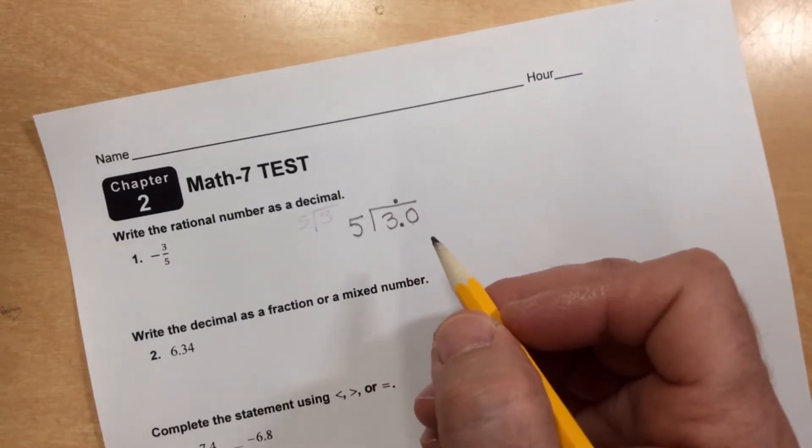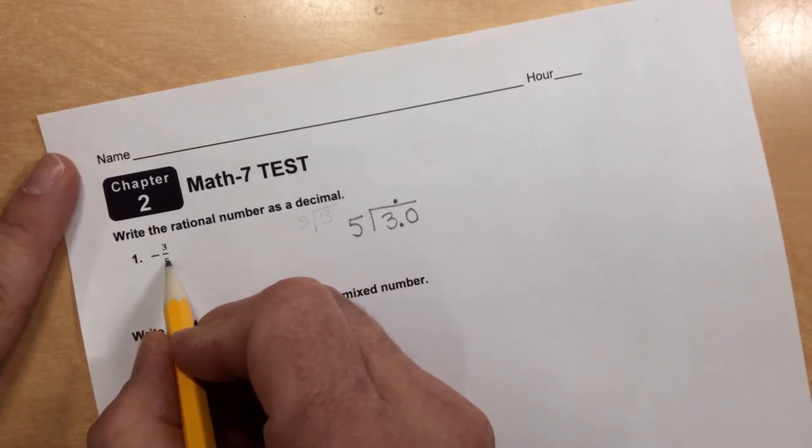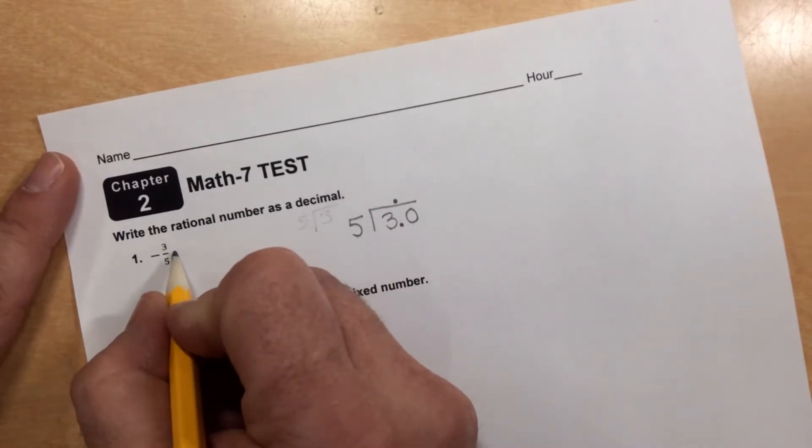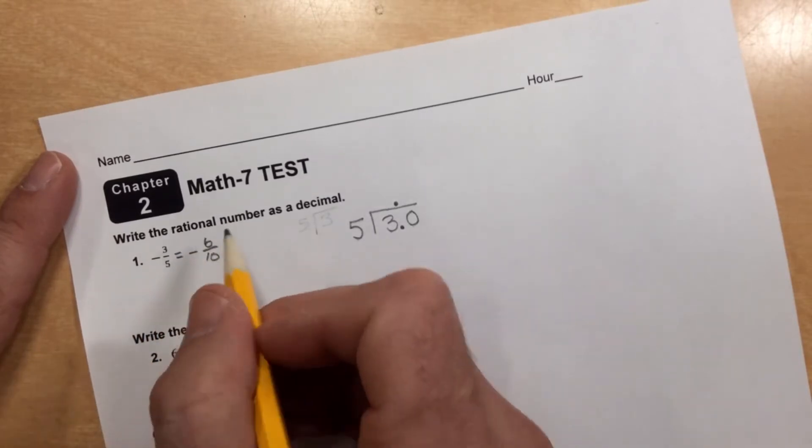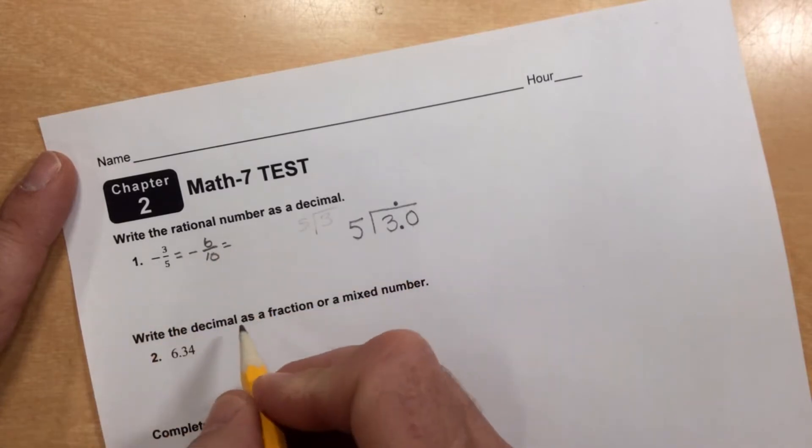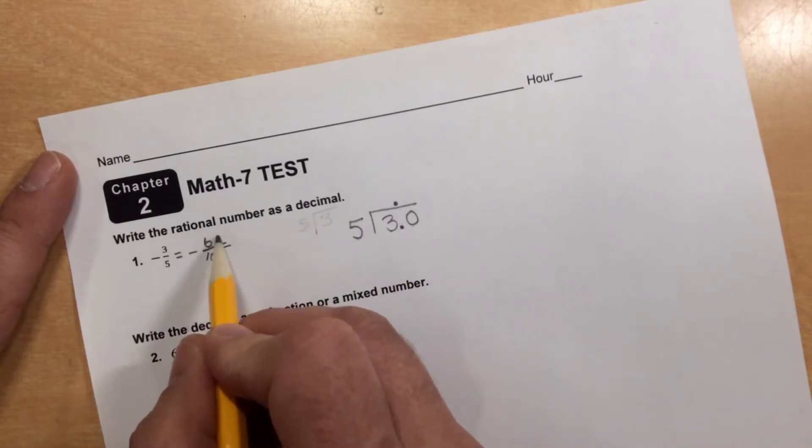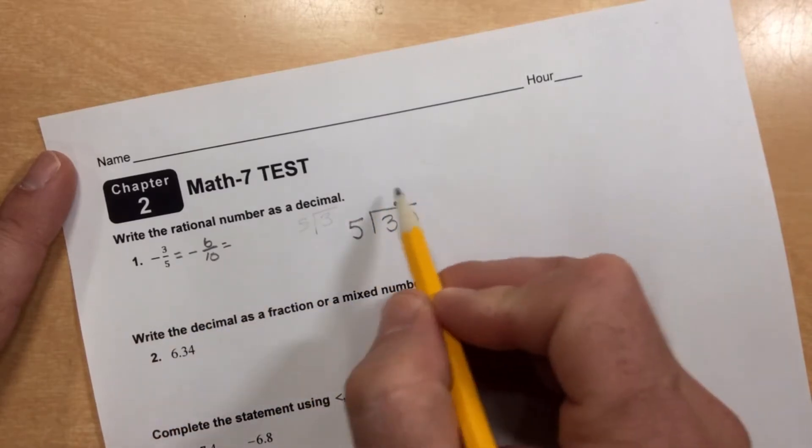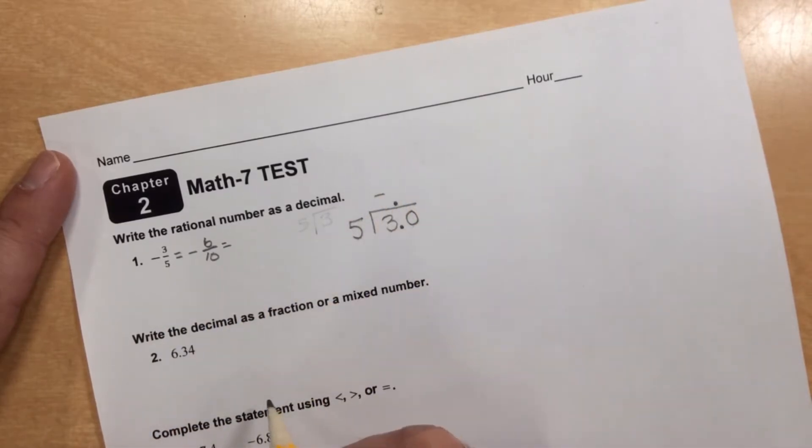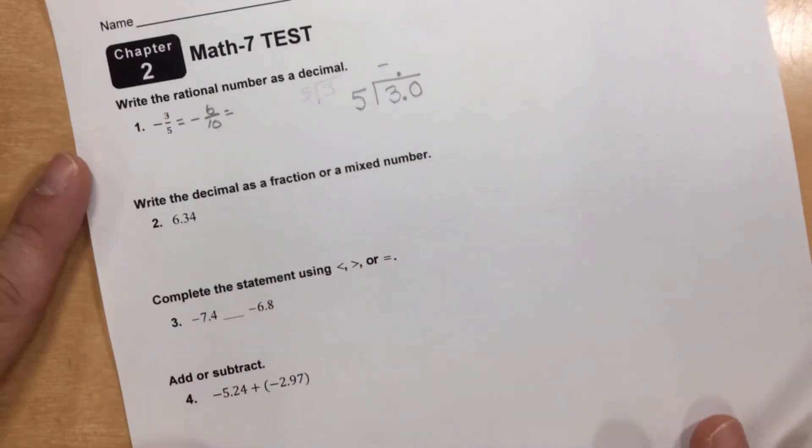But there is another way to do that problem. We could multiply the top and bottom by 2 here to make this negative 6 tenths, and if we make it negative 6 tenths, maybe we know how to write that as a decimal. So you can either write negative 6 tenths as a decimal, or you can do this math problem over here, remembering that your answer will be negative.